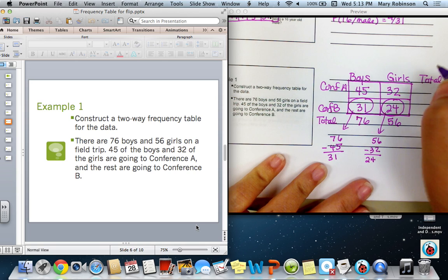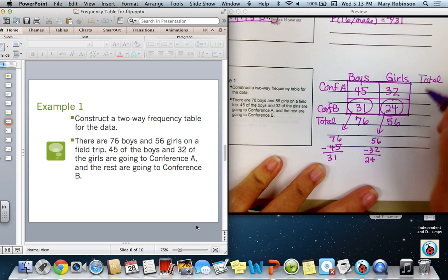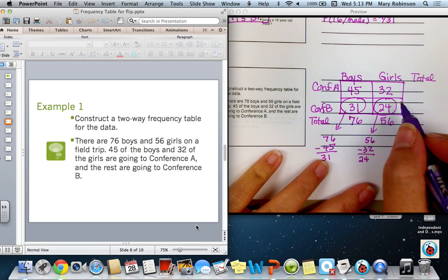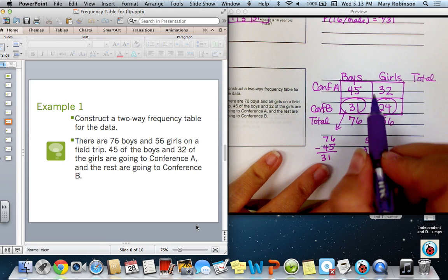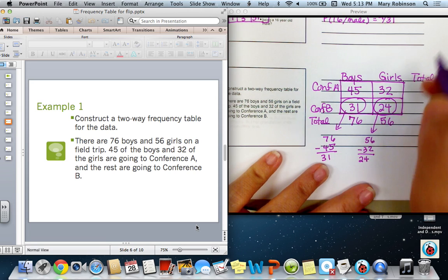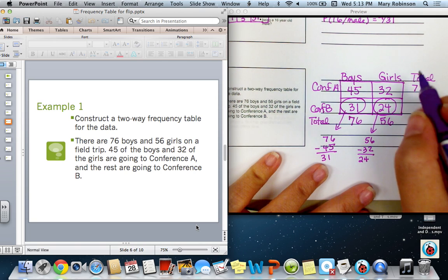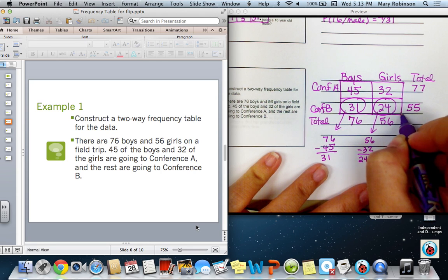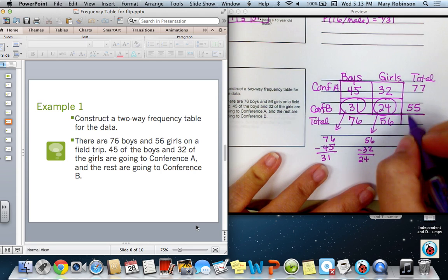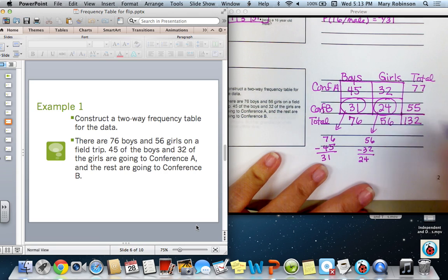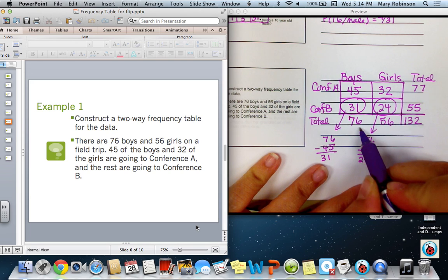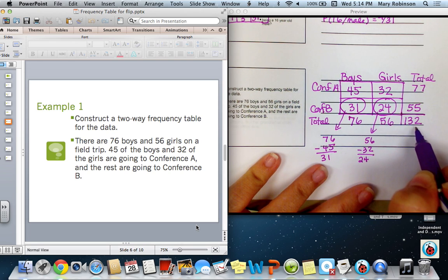Next, we want to go ahead and we don't know the totals. So we need to total this up in order to work with probability. If we add 45 and 32, we get 77 that are attending Conference A. And if we add 31 and 24, we get 55. Finding that total, that's 132. Again, double check that 77 and 55 add up to 132 and 76 and 56 add up to 132.